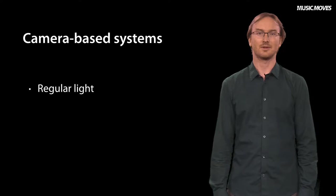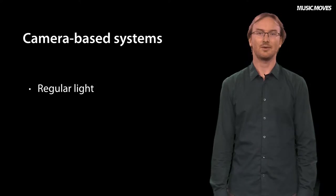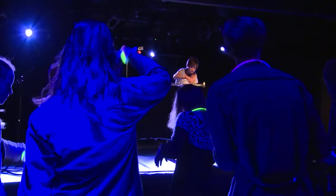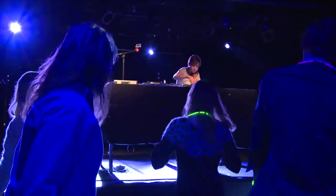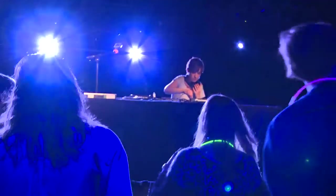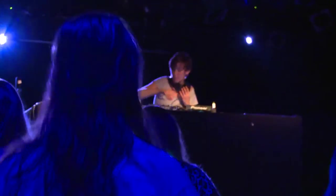Here we often talk about two different types of variables that we need to take into account. The first one is whether we are going to use cameras that capture the same thing that we see — that is, regular light — or use cameras that record, for example, only the infrared light. Infrared cameras can, for example, be very useful if you want to study people dancing in a dark club or other types of dark environments.